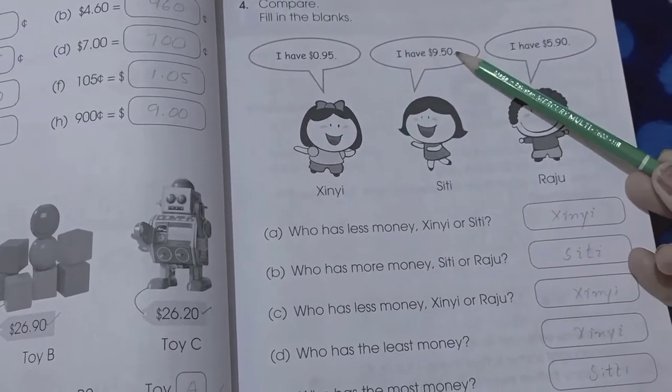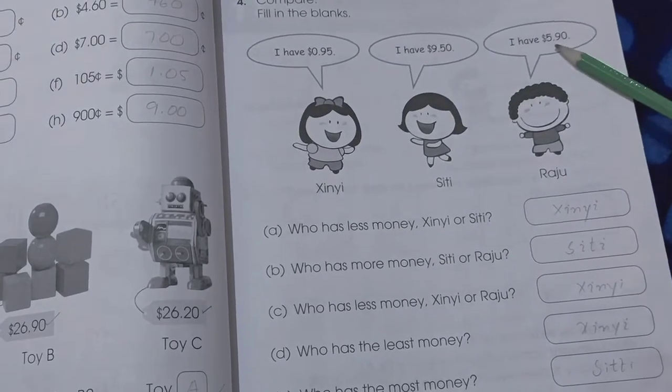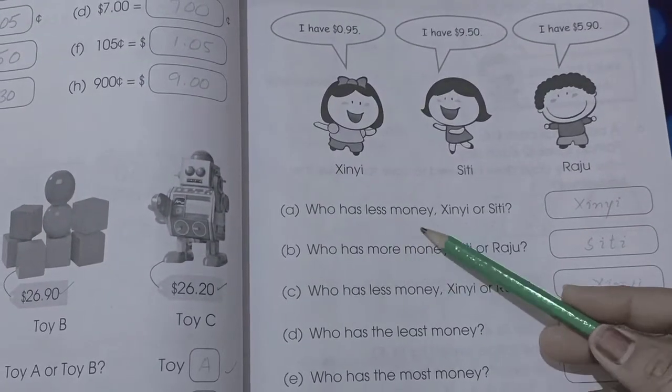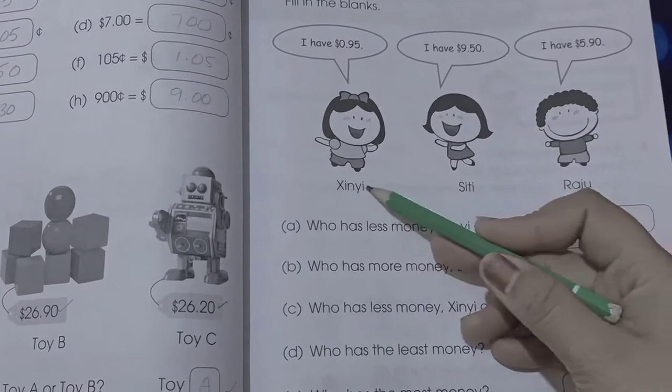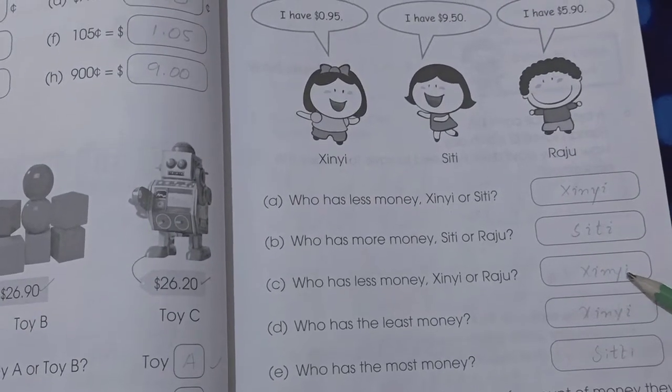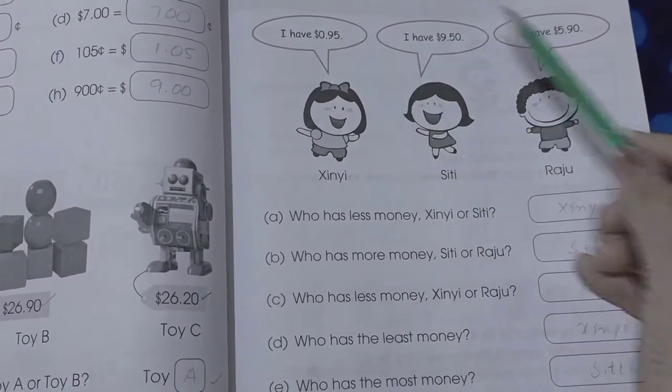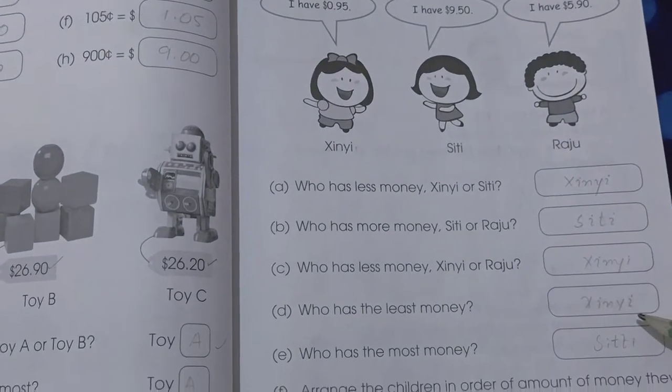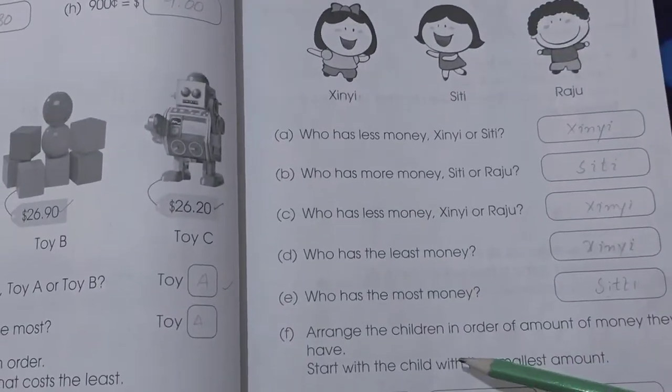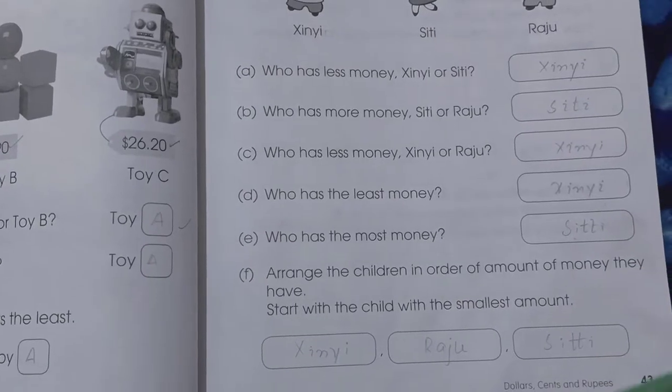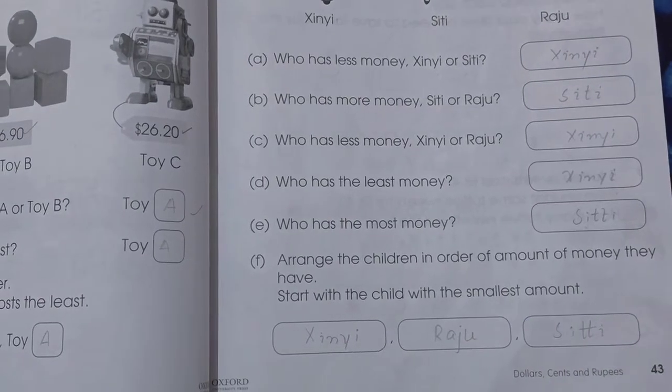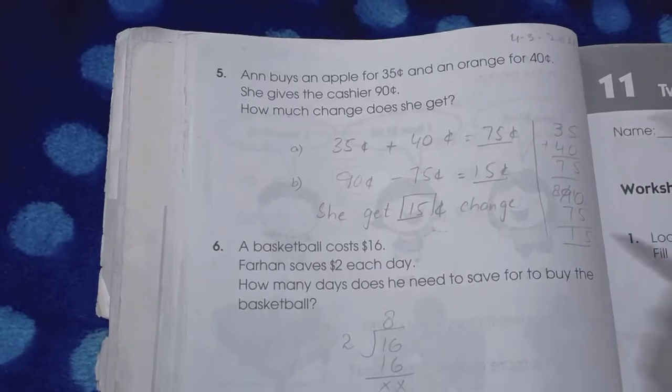Page number 43. Now we compare and fill in the blanks. Zini has 95 cents, City has $9.50, and Raju has $5.90. Who has less money, Zini or City? Zini has less money. Who has more money? City. Who has less money, Zini or Raju? Zini is having zero dollars and Raju has five dollars, so Zini has less. Who has the most money? City, because City has nine dollars. Arrange the children in order of amount they have starting with the smallest amount: Zini, Raju, and City.